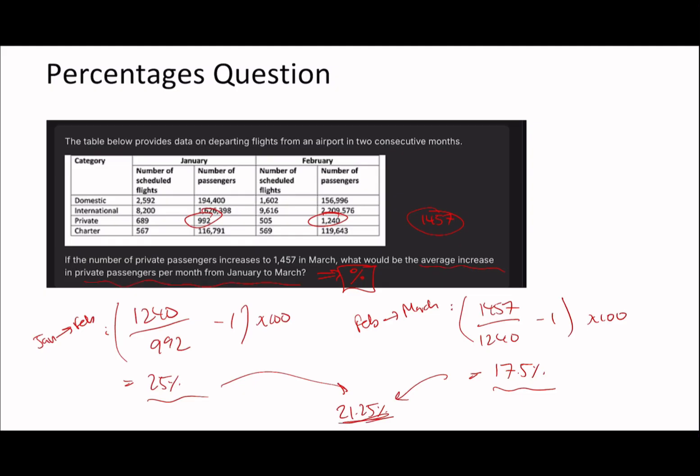Therefore, the average increase in private passengers per month is just the mean of these two values, which is both of them added together divided by two, which gives you 21.25%. But I'll be honest, this wasn't my first inclination. The way I thought about it was, if you think about it, you start at 992 and you end up at 1457. So it's like go to some middle number and you end up over here. But the point is that each time you're dividing your time. If you think about average increase in private passengers per month, I thought it would be the same percentage that you increase by.